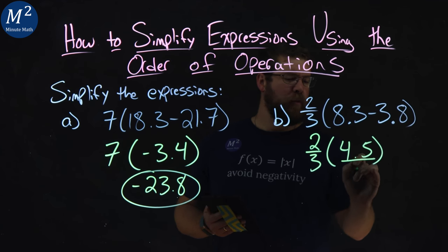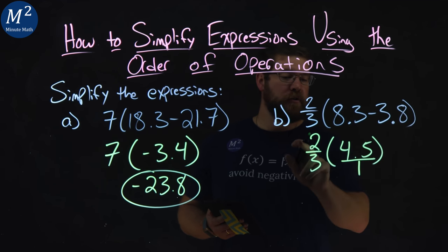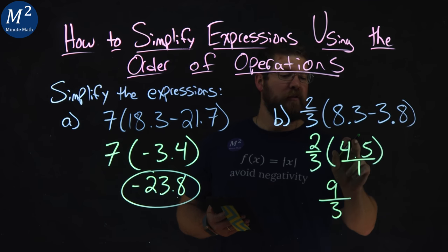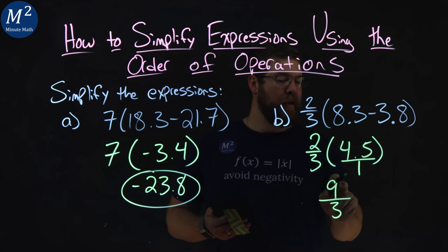4.5 is the same thing as 4.5 over 1. If we multiply across the numerator, 2 times 4.5 is 9. 3 times 1 is 3. So just because we had a decimal in the numerator doesn't mean if it's multiplied by 2, we wouldn't get to a whole number.